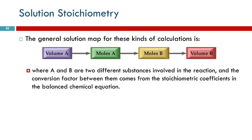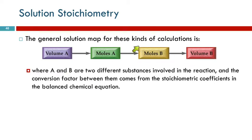The general map for stoichiometry was grams to moles to moles to grams. The moles-to-moles step is always in the middle. Here, instead of grams of A we're going to have a volume of A, and instead of grams of B a volume of B. The conversion between moles and volume comes from the molarity of the solution.